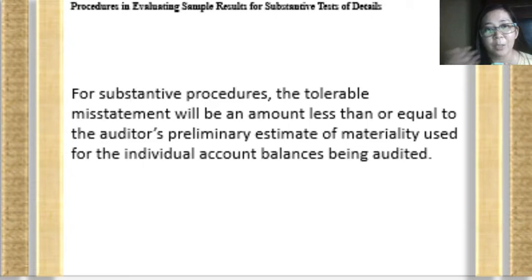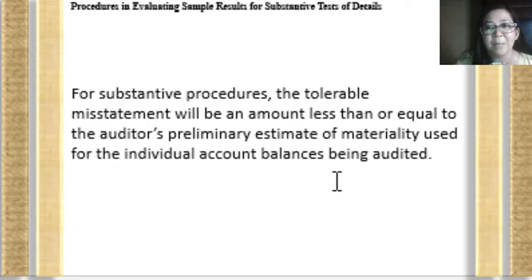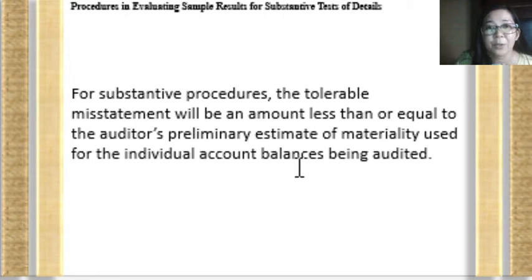The tolerable misstatement will be the amount less than or equal to the auditor's preliminary estimate of materiality. This is used for individual account balances that are being audited. This is how it is done for substantive procedures in the case of tolerable misstatements.